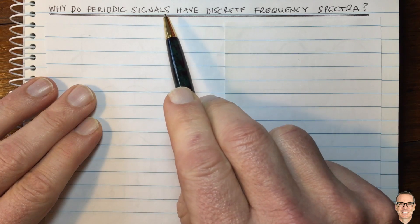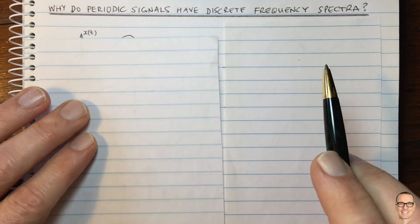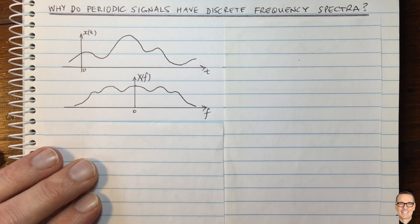Why do periodic signals have discrete frequency spectra? Let's start by looking at a non-periodic signal.